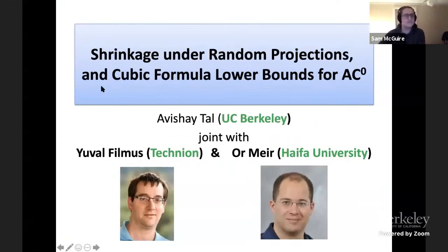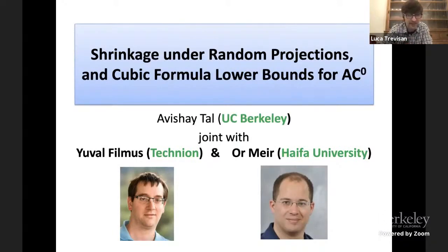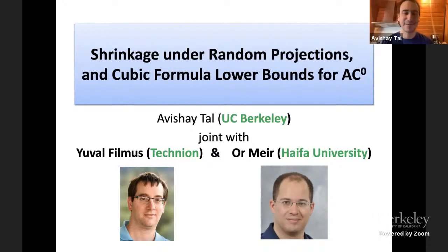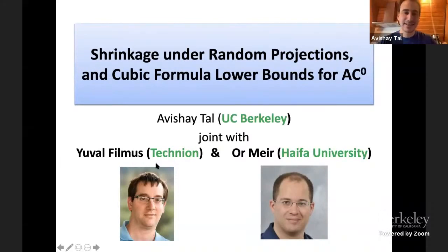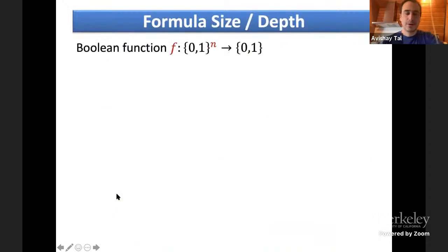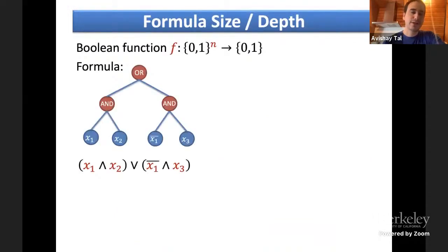Our next talk will be on getting a cubic formula lower bound for an explicit function in AC0. This is joint work with Yal Filmus, Yuval Grossman, and Noam Meir. We are talking about Boolean functions and the model of computation is Boolean formulas — binary trees with OR and AND gates, with variables or their negations at the leaves. Two complexity measures we care about regarding formulas are the size and the depth. We denote by L(F) the minimal number of leaves in any formula computing the Boolean function F, and by D(F) the minimal depth of a formula computing F. Depth captures the parallel time — the time it takes values to propagate from leaves to root.